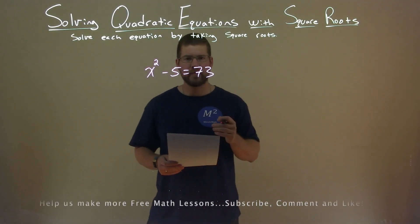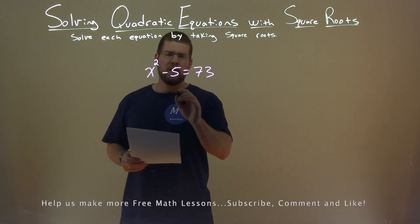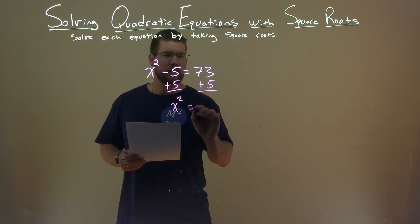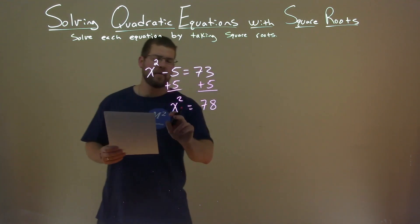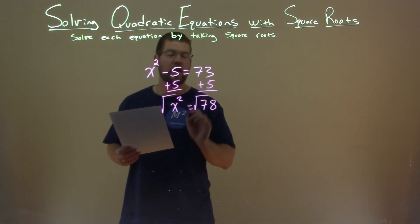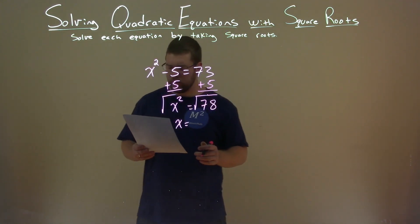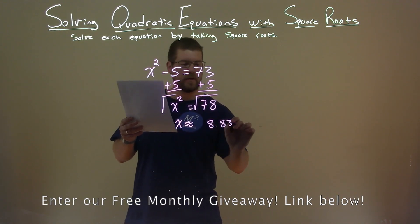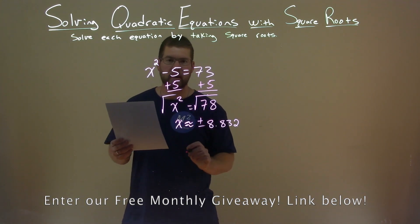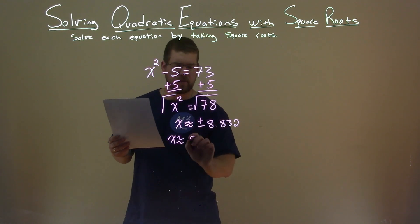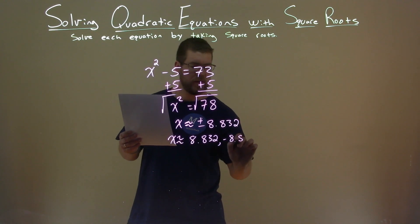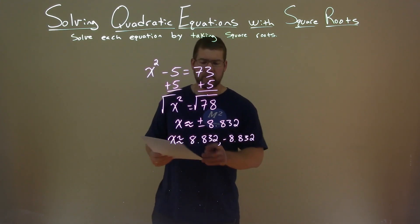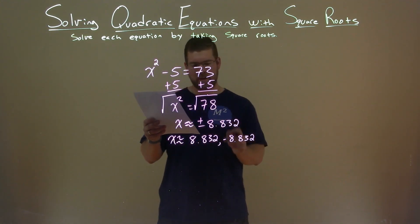We're given x squared minus 5 equals 73, and we want to solve this equation by taking square roots. First, I want to get x squared by itself, so I add 5 to both sides. That leaves x squared by itself, and 73 plus 5 is 78. Now I take the square root of both sides, leaving x by itself. The square root of 78 is approximately 8.832. Since we took the square root over the equal sign, that's a plus and minus. So x is approximately positive 8.832 and negative 8.832. That's our final answer.